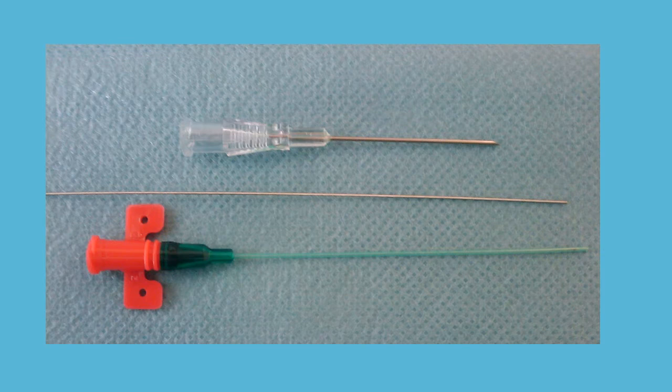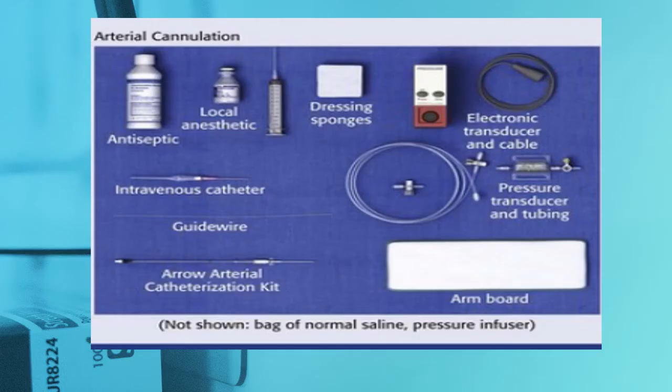This is the arterial line used in our setup. You can see the needle at the superior end. There is a guide wire which is passed through the needle. Once the guide wire is passed, the needle is removed, and the arterial line — shown as the green and red component — is railroaded over the guide wire. This is done via the Seldinger technique.